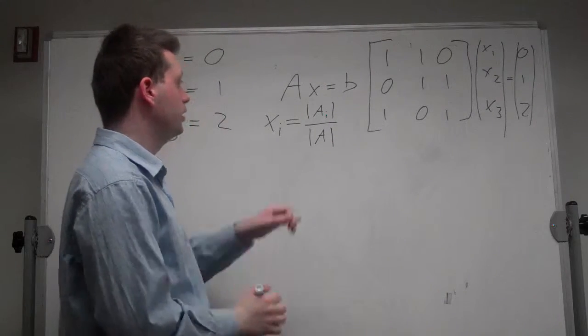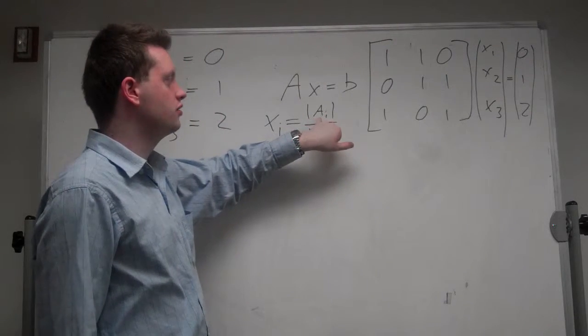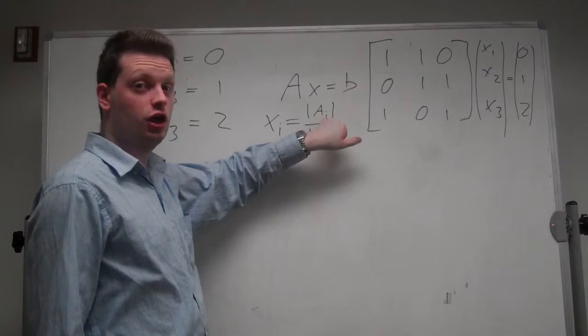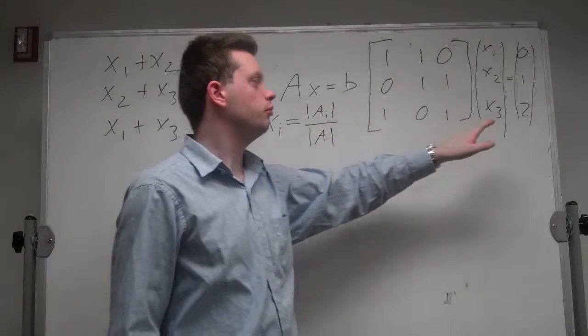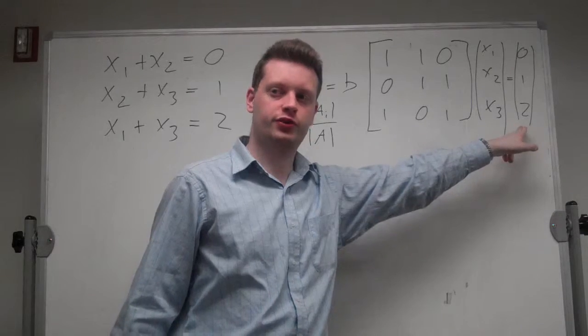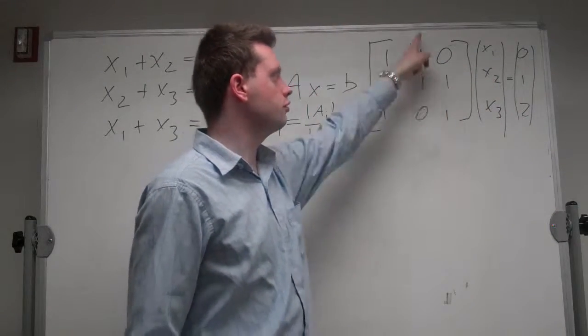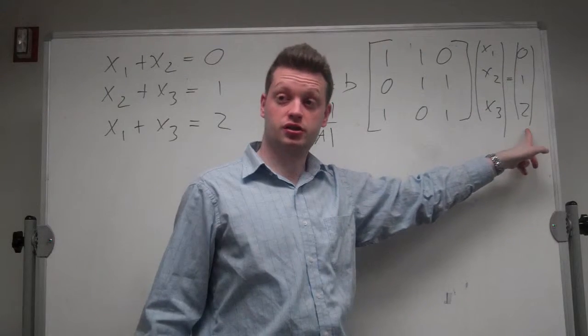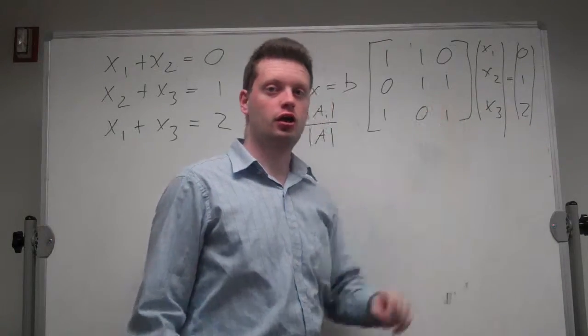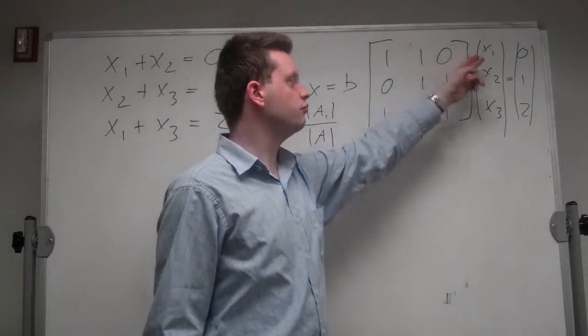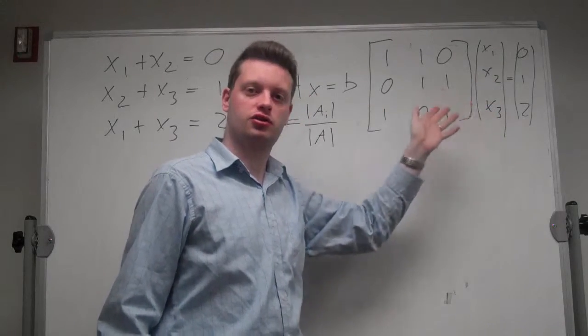Ai is the matrix of A where the i-th column is replaced by the b vector. So if you want x2, we take this matrix and replace the second column by this b vector. So let us get x1, x2, and x3 this way. Let's start with x1.